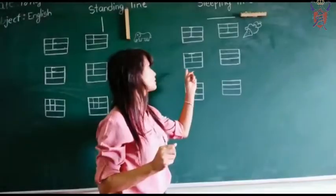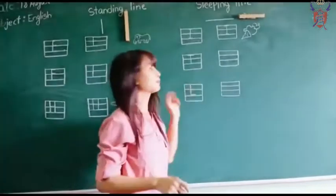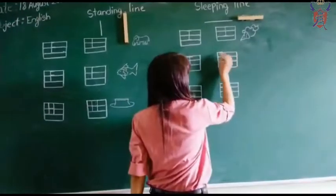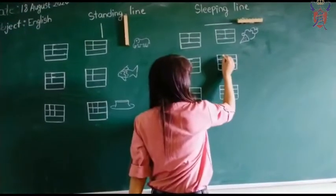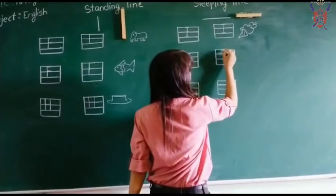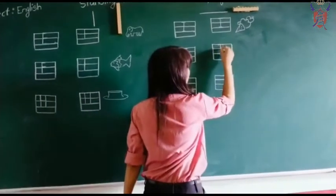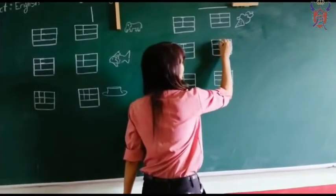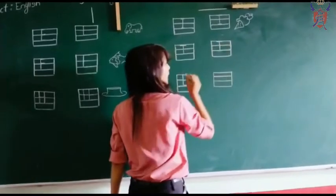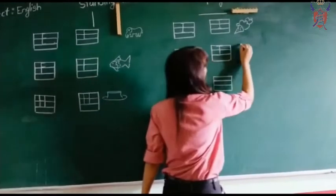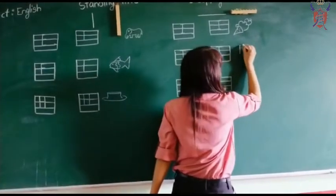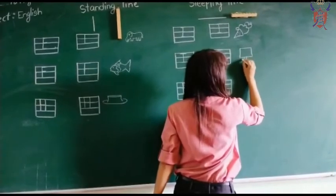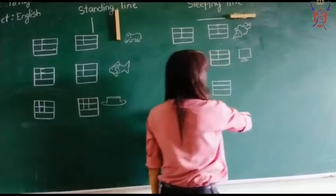Next letter is T. T for television. See how we will write letter T. First you have to draw a sleeping line, after you have to draw a standing line. T for television.